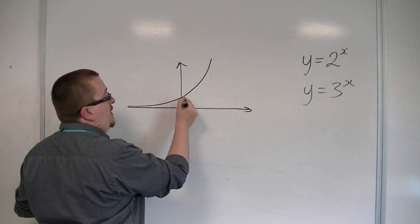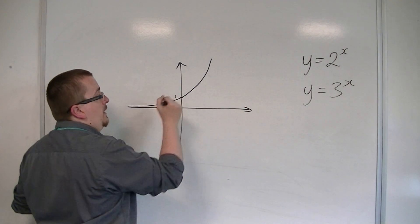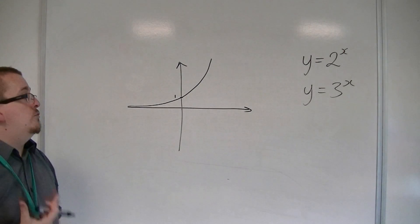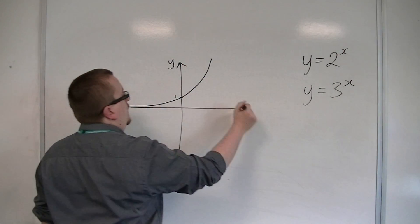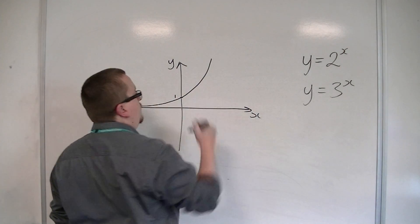When x is 0, we would have 2 to the 0, and so it must pass through the coordinates (0, 1). So this would be y equals 2 to the x.